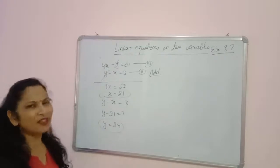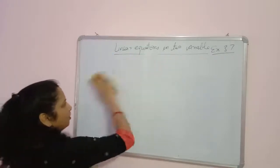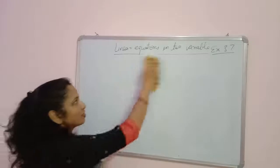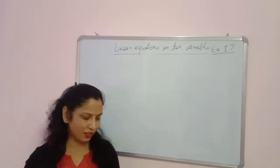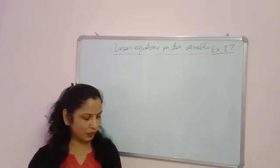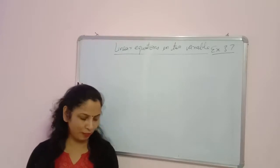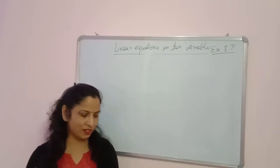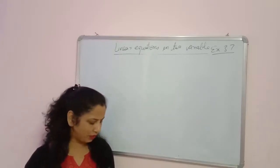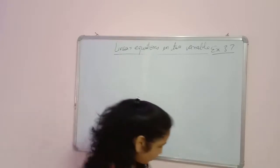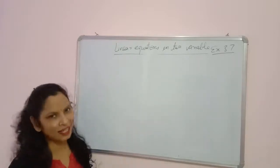The second question — it's really easy. One friend says: 'Give me 100 and I shall become twice as rich as you.' The other says: 'If you give me 10, I shall be six times as rich as you.' Tell me the amount of their capitals. There are two friends; let's call them A and B.